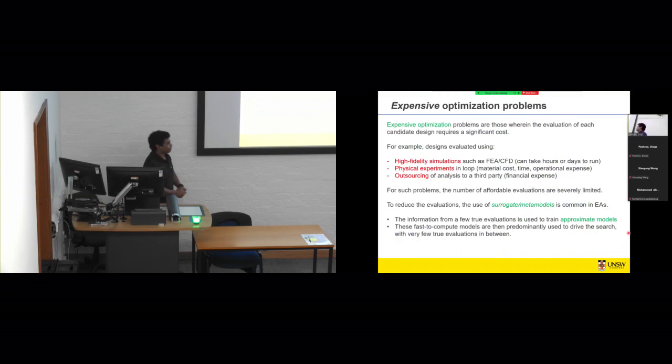So what are expensive optimization problems? Normally, when you run any optimization algorithm, you would evaluate several candidate solutions to improve the objective value until you reach the best one or the optimal one. Now imagine that if each of those candidate design evaluation took a lot of cost in terms of time or in terms of money. So for example, if you're optimizing aerofoil design and every evaluation, for every design evaluation, you need to run a long simulation like a CFD or you want to put it in a wind tunnel to test its performance as a physical experiment, then it's an expensive evaluation.